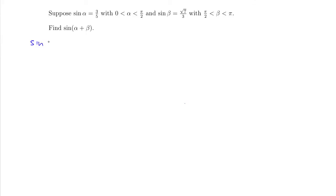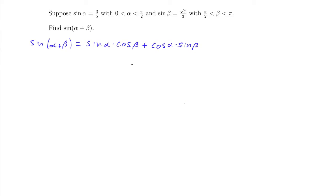You can look this up in a table: sine of alpha plus beta equals sine of alpha times cosine of beta, plus cosine of alpha times sine of beta. Notice that in order to find sine of alpha plus beta, we also need to find cosine of alpha and cosine of beta.